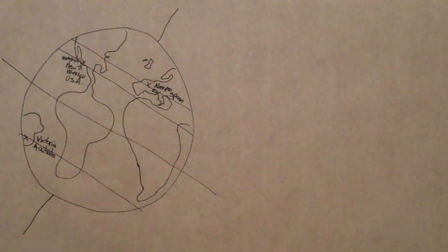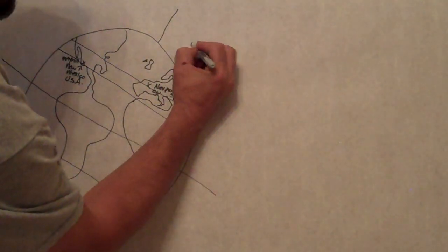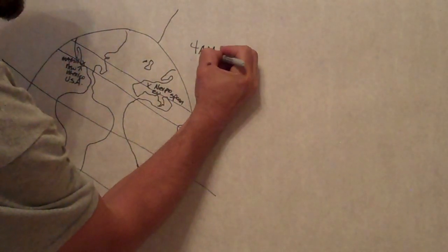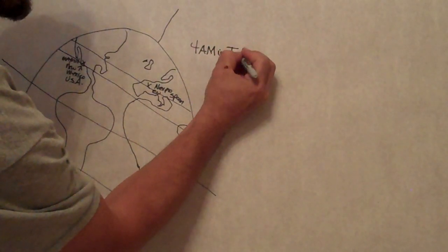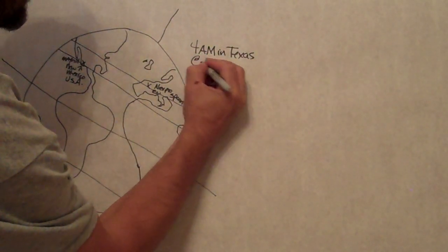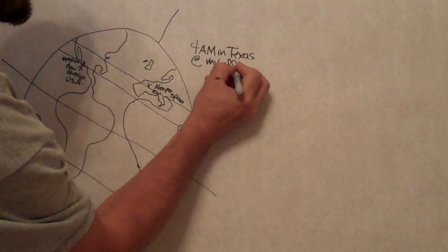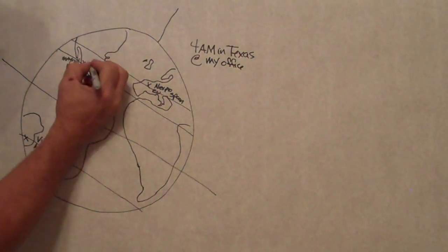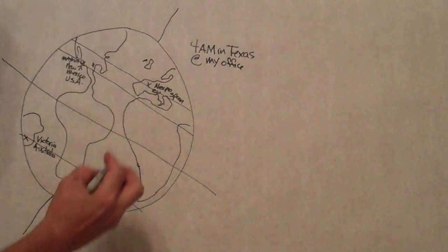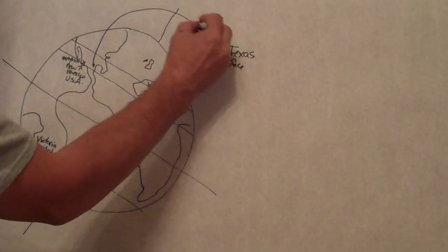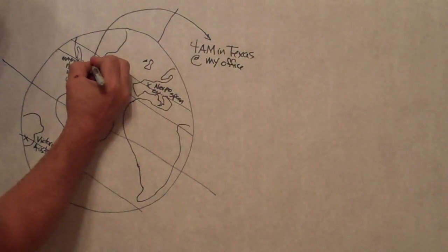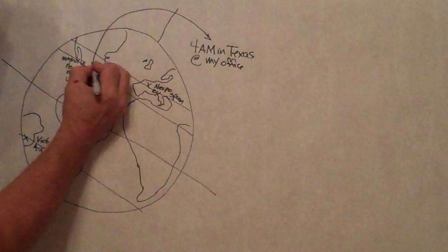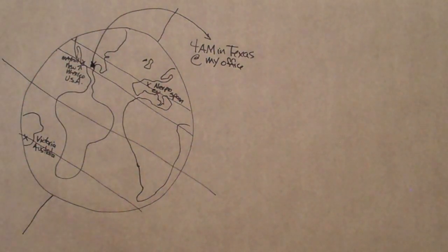Time zones. 4 a.m. in Texas, at my office. Because here I am. I'm in the great state of Texas. I've got to use telescopes in Mayhill. I've got to use telescopes in Nerpio. And I have to use telescopes in Victoria, Australia.